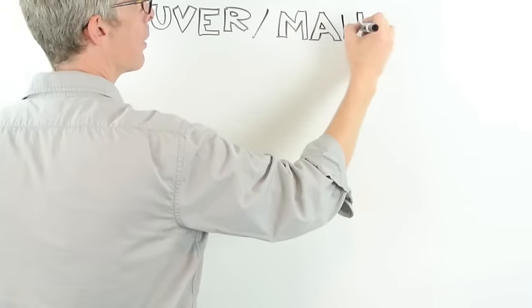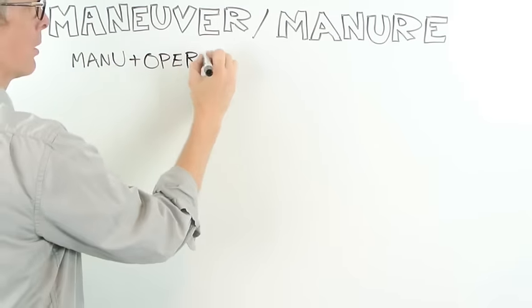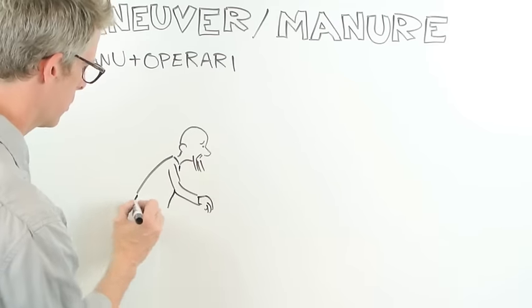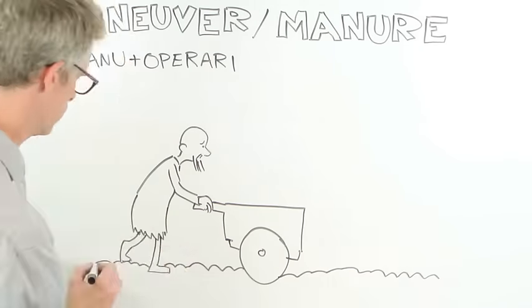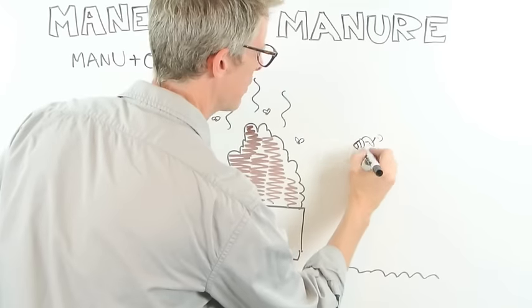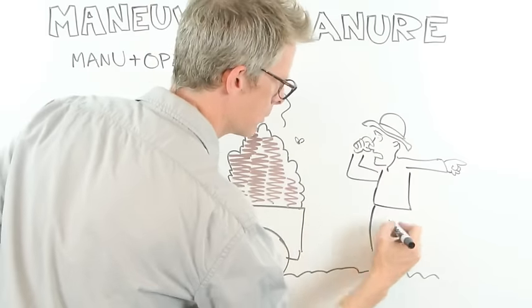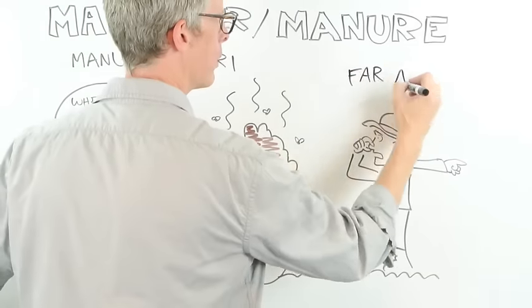Maneuver and manure. Maneuver comes from Latin manu operari, to work by hand. But so does manure, which was originally a verb meaning to till the land. Later, it became a word for the stuff you till into it.